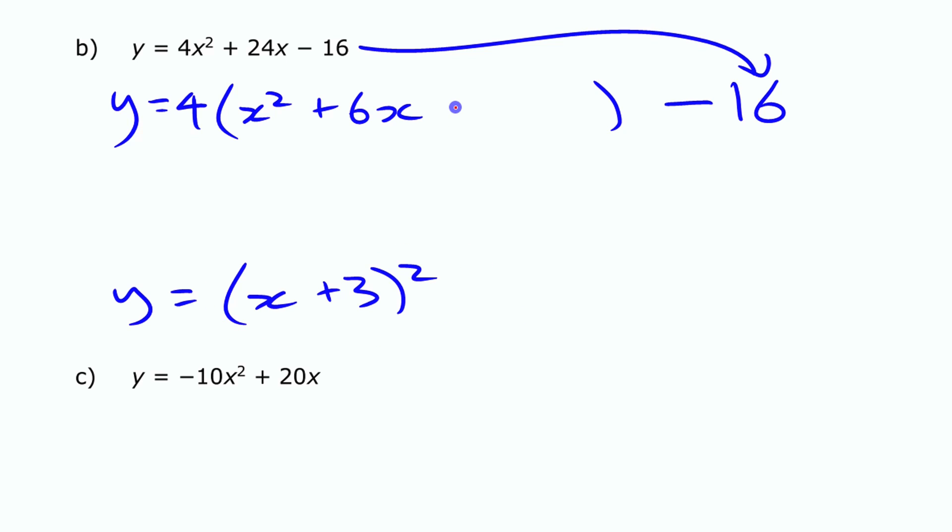I am going to have to have a 9 here and a minus 9, again because we want to balance it out. We don't want to change what we have.